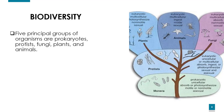Prokaryotes are those organisms without a nucleus. Protists are tiny microscopic organisms. Fungi are reducers. Plants are photosynthetic organisms. And animals are not photosynthetic — plants and other organisms depend on them for food.